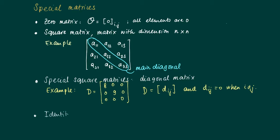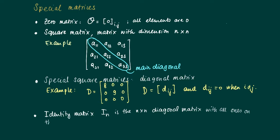There is one special square matrix of dimension n times n called the identity matrix, and this is the matrix with all diagonal elements equal to one. For instance, I_2 is the matrix with two ones on the main diagonal and zeros outside, and I_3 is the corresponding three by three version. The general idea should be clear.